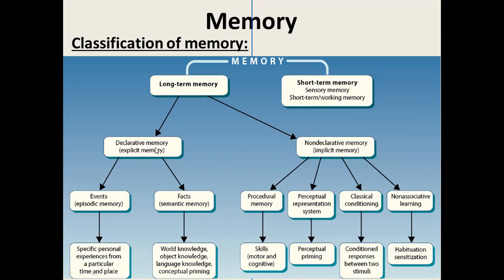Declarative memory refers to events or facts — whatever information can be declared. You can remember episodes such as specific personal experiences: the first day of your college, the first day of school, your first award. You can also remember facts such as world knowledge, object knowledge, language, and conceptual understanding. For example, knowing that this is a pen or this is a mobile — these are facts stored as object knowledge, and once fitted into your brain, they are always remembered.